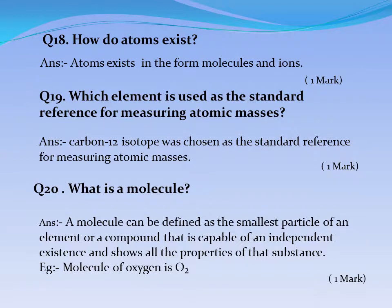Question No. 19: Which element is used as the standard reference for measuring atomic masses? Answer: Carbon-12 isotope was chosen as the standard reference for measuring atomic masses.